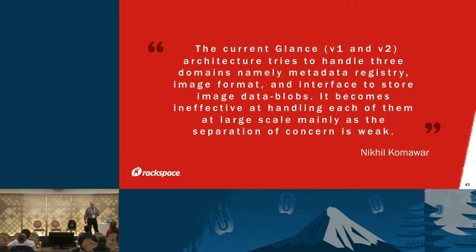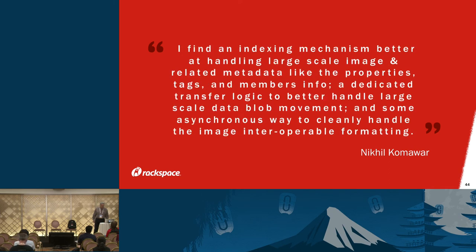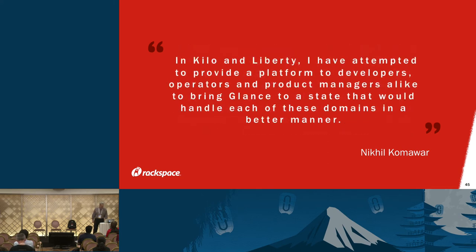Since Nikhil couldn't be here, here's a quote from him: the current Glance architecture tries to handle three domains — metadata registry, image format, and interface to store image data blobs — and it becomes ineffective at handling each at large scale, mainly as the separation of concerns is weak. He finds an indexing mechanism better at handling large-scale image and related metadata like properties, tags, and members info, a dedicated transfer logic to better handle large-scale data blob movement, and some asynchronous way to cleanly handle the image interoperable formatting. In Kilo and Liberty, he attempted to provide a platform to bring Glance to a state that would handle each of these domains better.